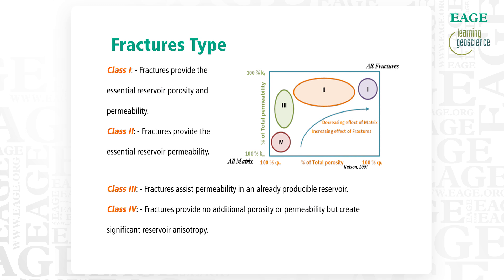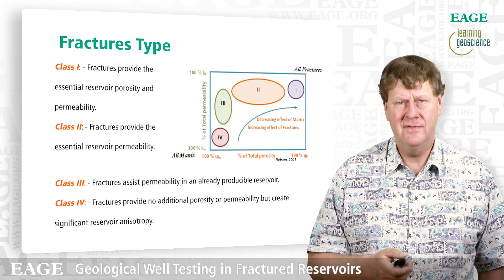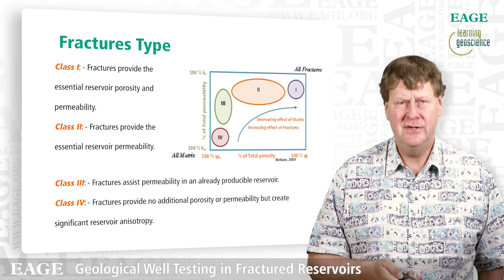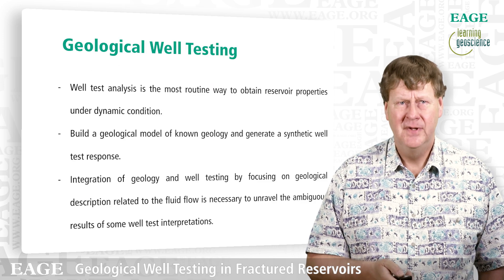Regarding types of fractures in fractured reservoirs, here is Ron Nelson's fracture classification. We're going to concentrate on Class 2 fractures — these are fracture systems where you have the essential permeability in the fractures but you have the storage in the matrix. These are some of the more challenging ones to characterize.